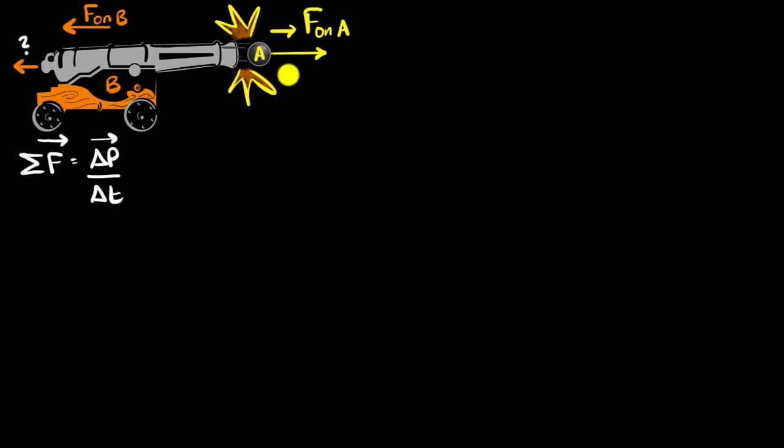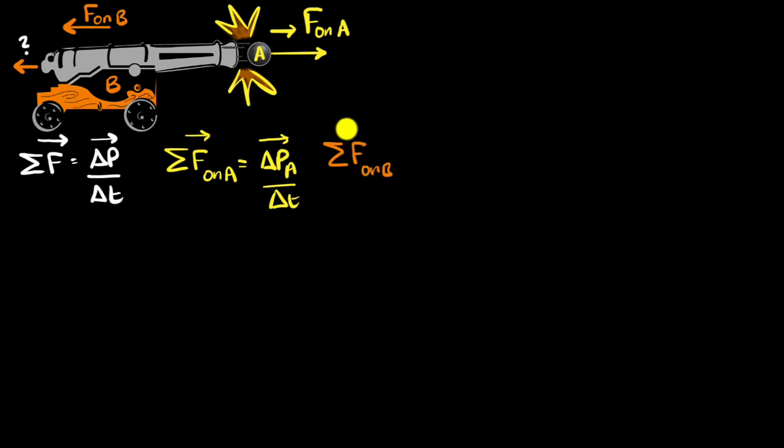These are the only two forces acting over here. So if I apply that equation for our object A, which is the ball, we can say the net force — the total force acting on A, which is basically one force because there's only one force acting on A — should equal the rate of change of momentum of A. And similarly, I can write the total force or the net force acting on B, which is this force because there are no other forces, and that should be the rate of change of momentum of B, the cannon.